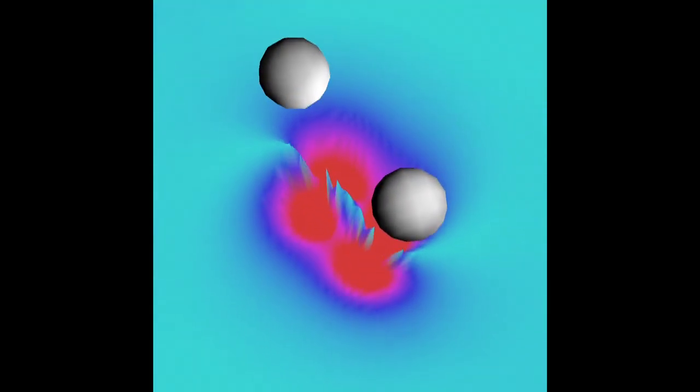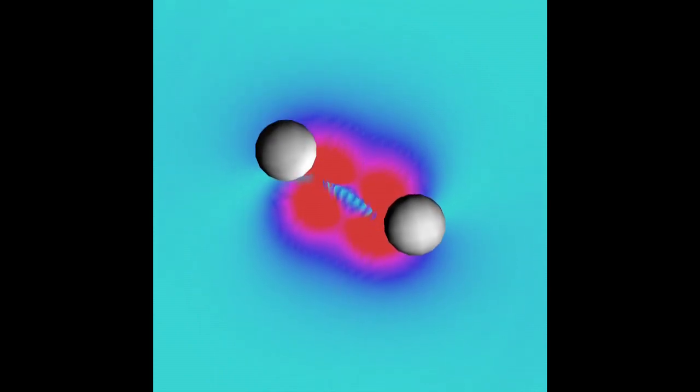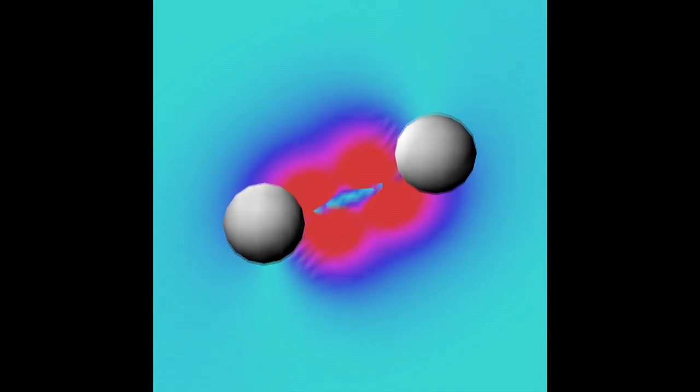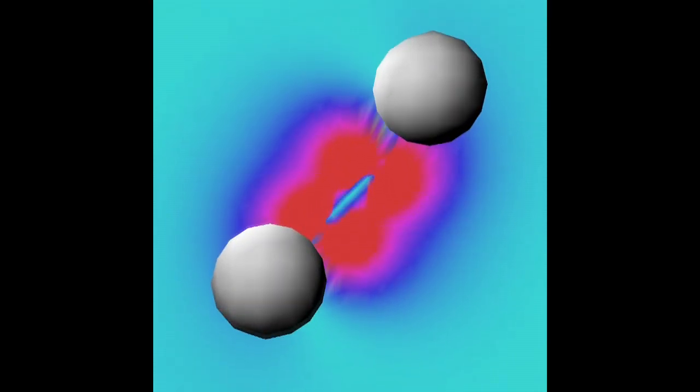This energy loss forces the two black holes to get closer and closer together. The colors in the movie indicate the intensity of the curvature of the space-time and the gravitational waves are ripples on this curvature.